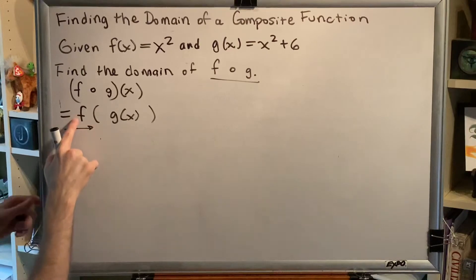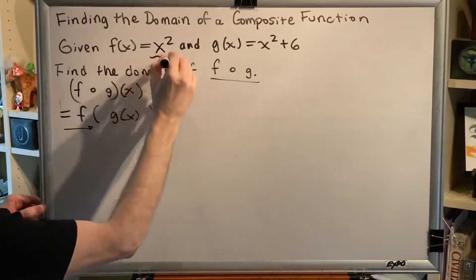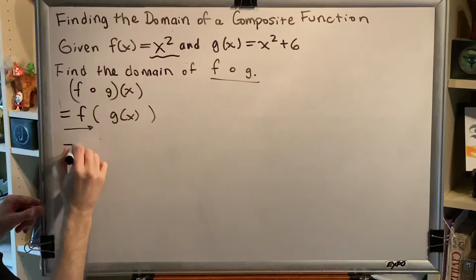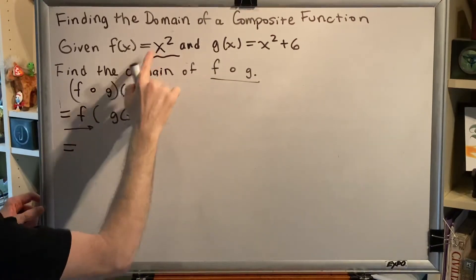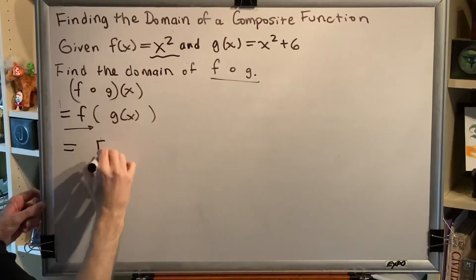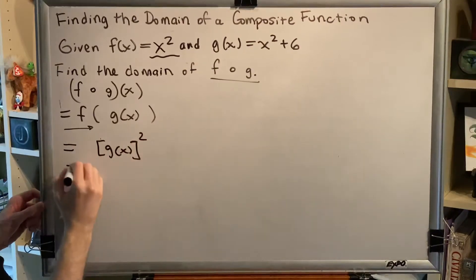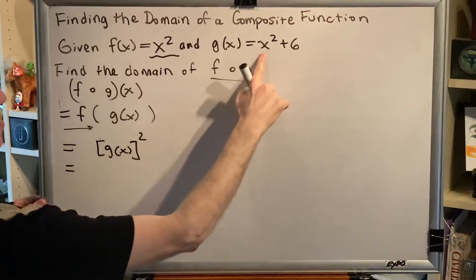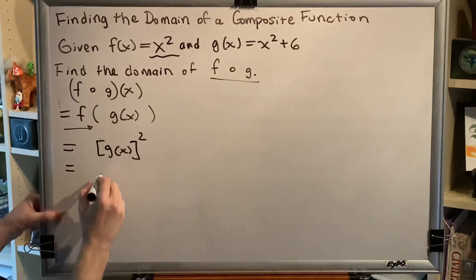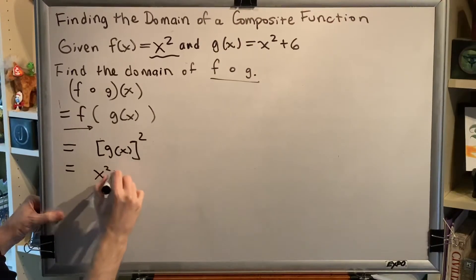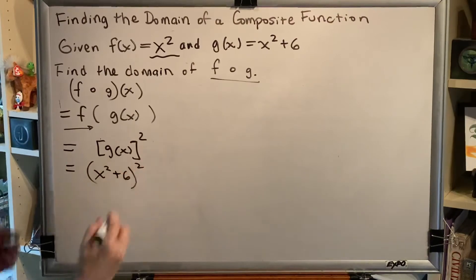That means we're going to use the right-hand side of function f as our next line of algebra, but instead of x, we'll put g of x. So we're going to have g of x squared. g of x of course is equal to x squared plus 6. So then we get x squared plus 6, all in parentheses, squared.